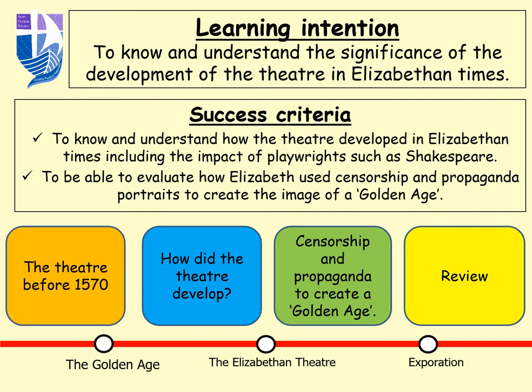In this lesson, we're going to think about how the theatre developed. We're also going to look at censorship and propaganda and how that created this whole idea of a golden age. Then next lesson, we're going to look at exploration and the work of people like Sir Francis Drake and other English explorers.